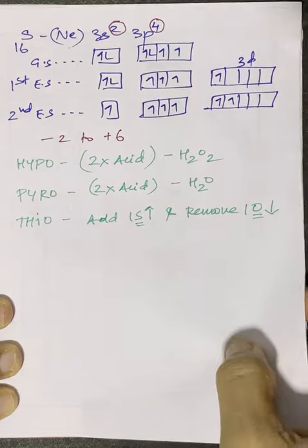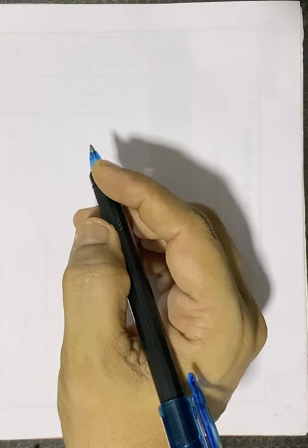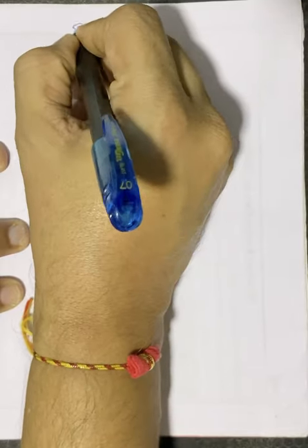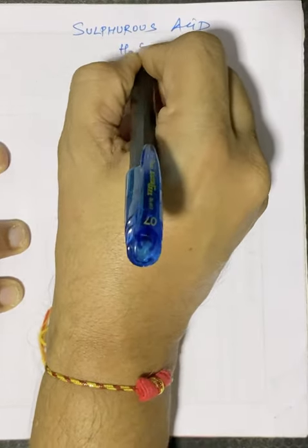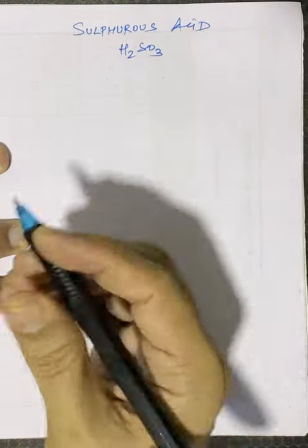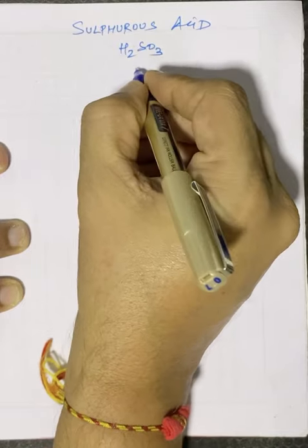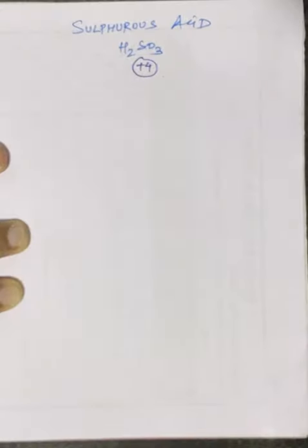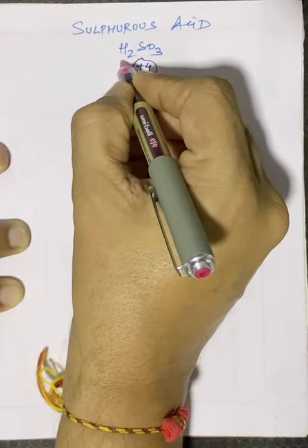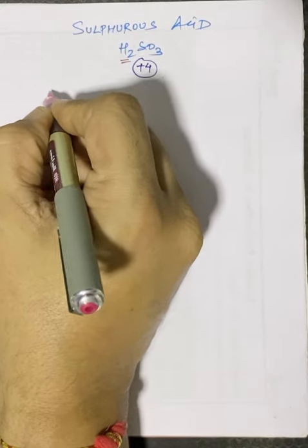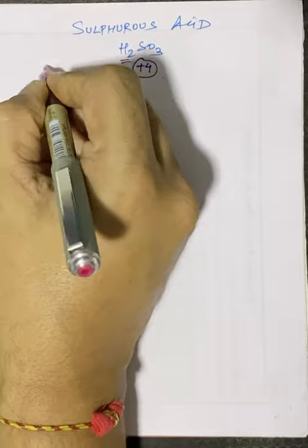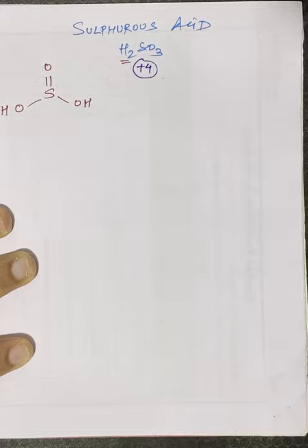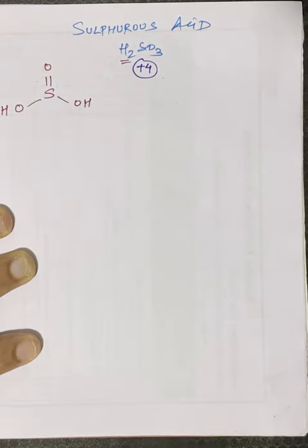To remember all the oxy acids, we only need to know two base acids. The first is sulfurous acid, H₂SO₃. In H₂SO₃, the oxidation state of sulfur works out to +4. Since there are two hydrogen atoms, there will be two S–OH bonds, and then sulfur has a double-bond oxygen — so the structure is S with two OH groups and one =O.